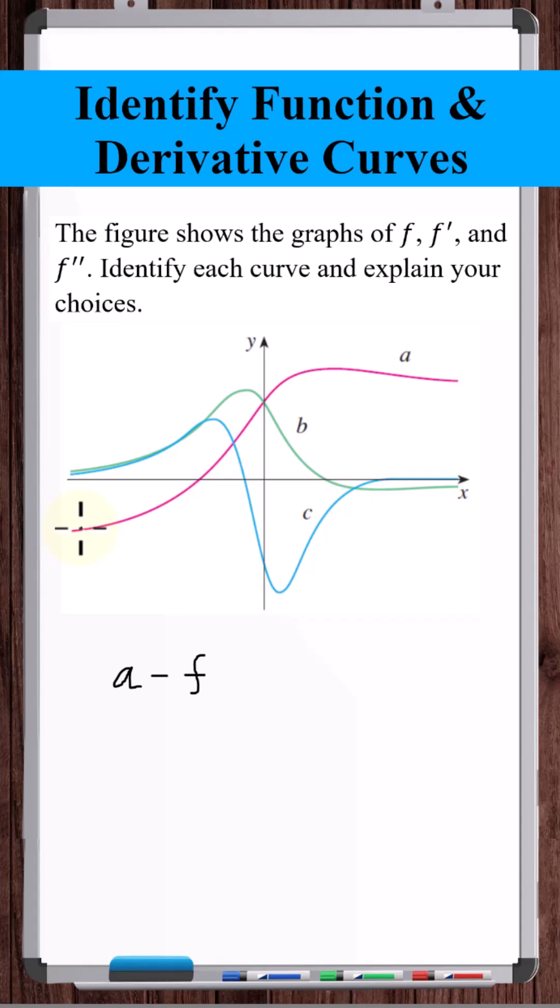Okay, so now looking at F, it's concave up, and then it switches to concave down, maybe somewhere around here in this region.